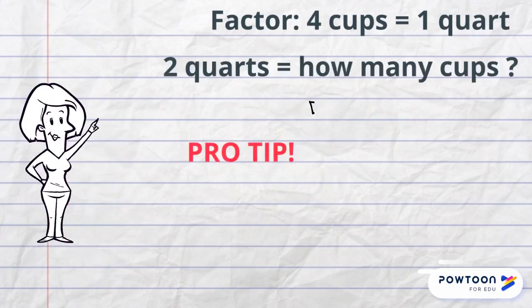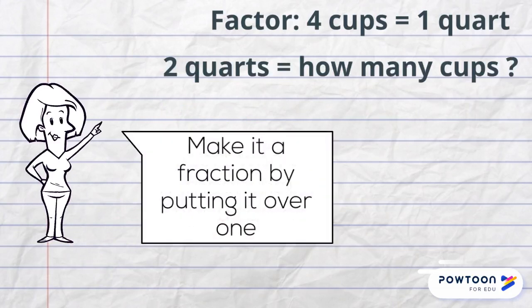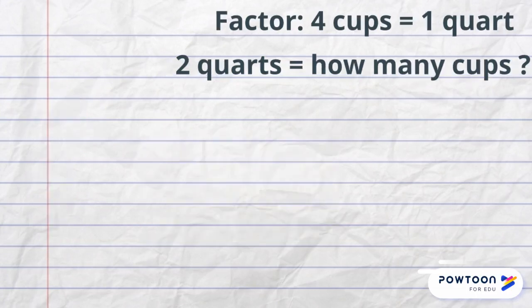A pro tip for dimensional analysis is to start with a number that is not a factor, only one unit, and make it a fraction by putting it over one. In this case, I will take two quarts, since it is not a factor, and make it a fraction by putting it over the number one.